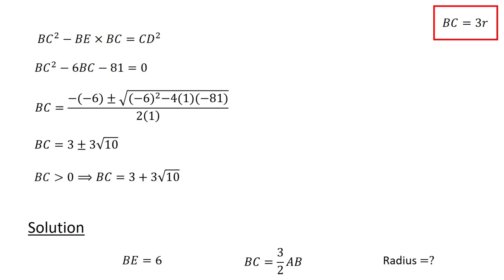Because BC equals 3R, we have 3R equals 3 plus 3 square root 10. Therefore, R equals 1 plus square root 10, which is the solution to our problem.